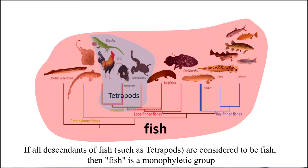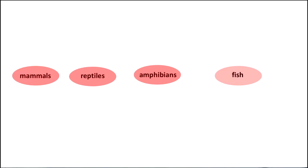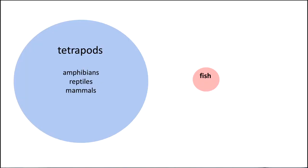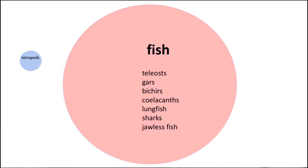But if we include the tetrapods in the fish more consistently — if all the descendants of a fish, such as the tetrapods, are considered to be fish — then we're talking about a monophyletic group. I think monophyletic groups are the way to go, because if you have an ancestor, then everything that descends from that ancestor should have a common name. The common man thinks of mammals, reptiles, amphibians, and fish as separate. In reality, if you start counting species, there are lots and lots of fish, and then there's this small group called tetrapods. Even worse — or more accurately — the tetrapods are a kind of fish. They evolved from fish.